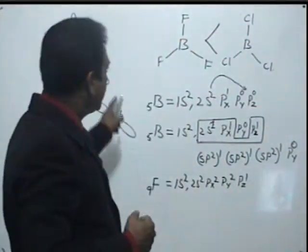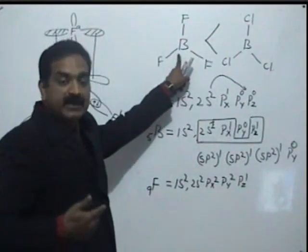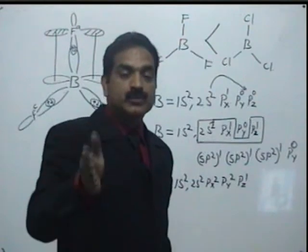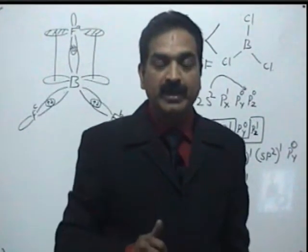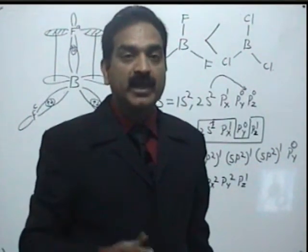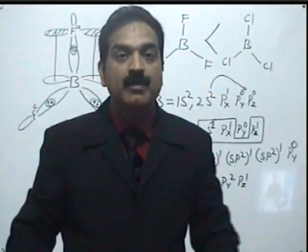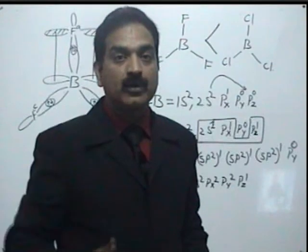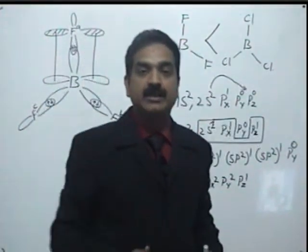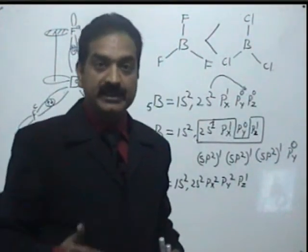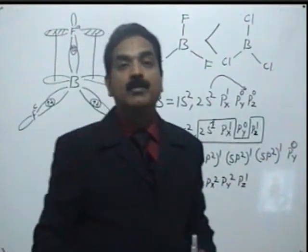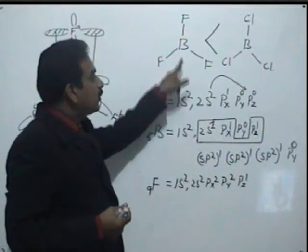So, BF3, which we would expect to be more acidic because fluorine is highly electronegative, is actually less acidic. Since we have the concept of back bonding, we can say that in BF3, the electron deficiency on boron is reduced because fluorine offloads its extra electron density onto boron. So this boron is not as electron deficient as we expected.